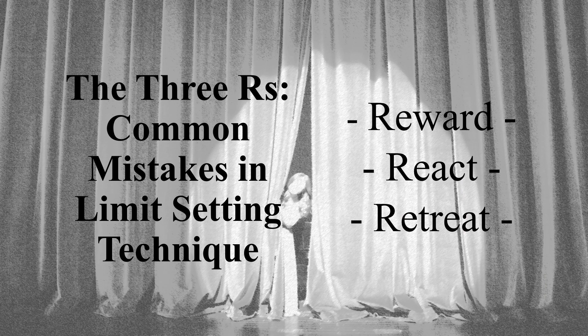The three most common mistakes in limit setting — I refer to them as the three Rs. The first is Reward: 'No, you can't have that second ice cream. One ice cream's enough.' And then giving one more — rewarding. The second is Reacting: when the child has a tantrum and the adult gets triggered, they have a tantrum and become dysregulated — no longer modeling healthy behavior for their child. Remember, you're the exemplar. How you respond to situations of stress and tension is how they learn to respond.